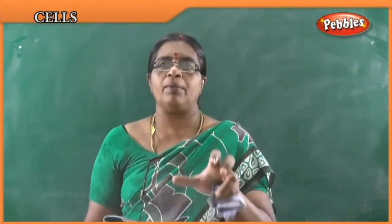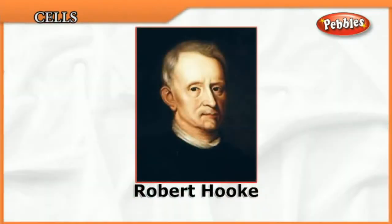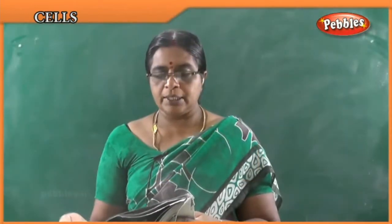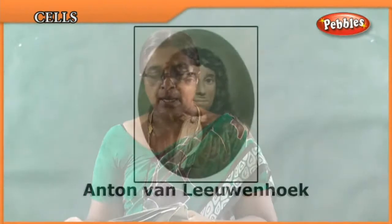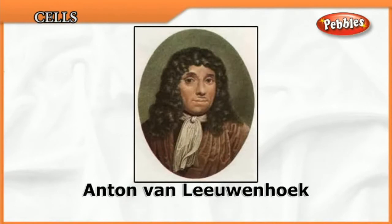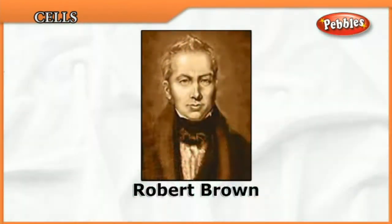Robert Hooke gave the name 'cell' to what he found. Anton van Leeuwenhoek was the person who developed the microscope. Robert Brown was the person who found out the nucleus — that is his contribution. Robert Brown also gave the name 'nucleoplasm.' The liquid present around the nucleus is called protoplasm. These are the four scientists who gave the main basis for the study of cells.